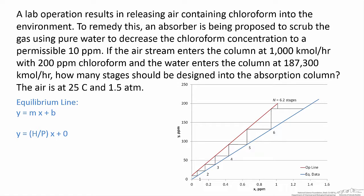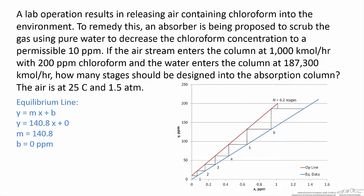When we compare these two equations, we see the Henry's constant divided by the pressure is actually equal to m, which is our slope. And there is no offset for the equilibrium information, so that b value is going to be equal to zero. We look up the Henry's law constant for this particular system — it's approximately 211 — and divide that by the system pressure, which is 1.5 atmospheres. We derive the equation y is equal to 140.8x. This gives us a value of m, which is our slope, equal to 140.8, and b, which is our intercept, equal to zero.